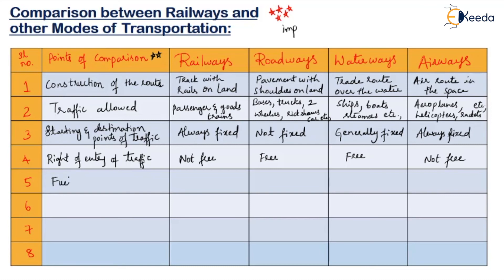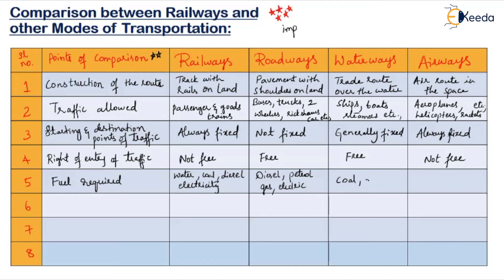The fifth point is the fuel required. In railways, we require water, coal, diesel, and electricity — different trains use different fuels. In roadways, we have diesel, petrol, gas, and electric. In waterways, it is coal and diesel. In airways, it is petrol and diesel.